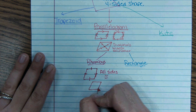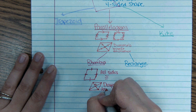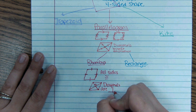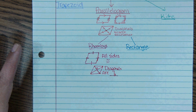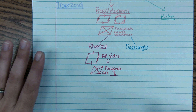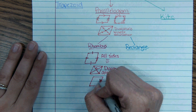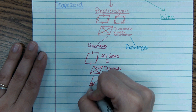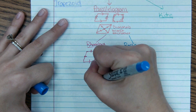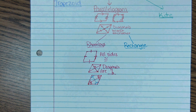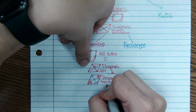For a rhombus, the diagonals are perpendicular — they make a 90-degree angle. The third property of a rhombus is that the diagonals bisect the angles. So a diagonal bisects its corner angle into two equal parts, and both sides of the angle are the same measure. The same happens with the other diagonal.